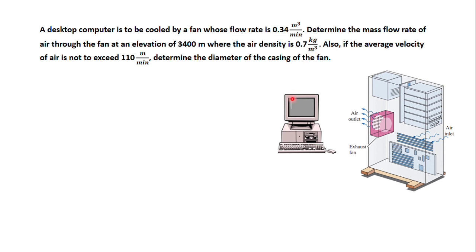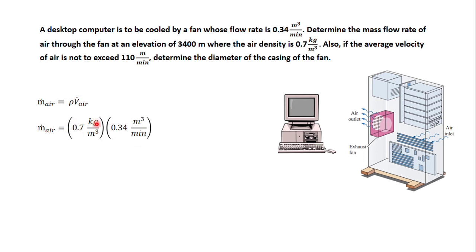To solve the mass flow rate of air, we use the formula: mass flow rate equals density multiplied by the volumetric flow rate of air. Plugging in the values, we have 0.7 kilogram per cubic meter multiplied by 0.34 cubic meter per minute, giving us 0.238 kilogram per minute. Converting to kilogram per second, the mass flow rate of air is 0.0040 kilogram per second.